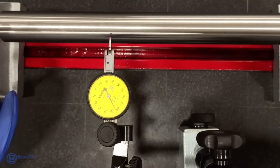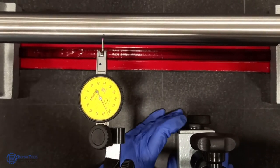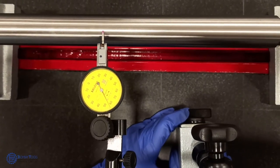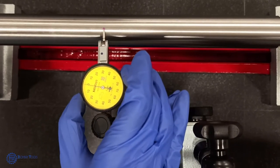Now let's check the run out of this component. I have fixed it between the centers. Now place the lever dial gauge with a minimum pressure on the component. Using the bezel, set it to 0.